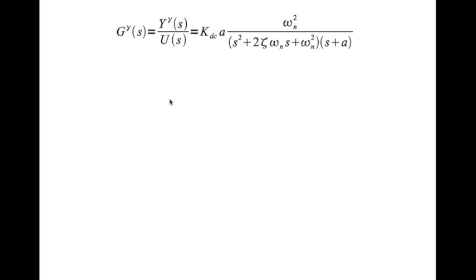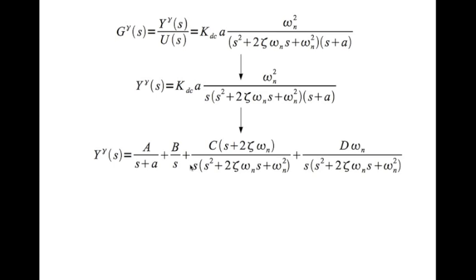Now let's look at what happens. That's the modified transfer function which is equal to Y gamma of s divided by U of s. Y gamma of s is the modified step response. Assuming that U of s is step, this is the Laplace transform of the modified step response. We do a partial fraction expansion like so. Now all the terms from here to here are part of the original step response.